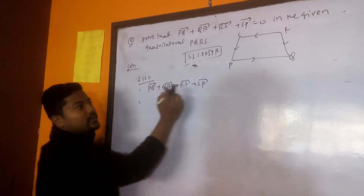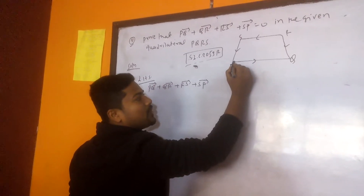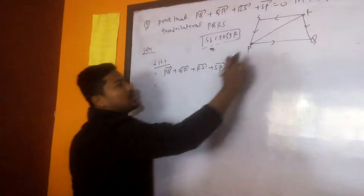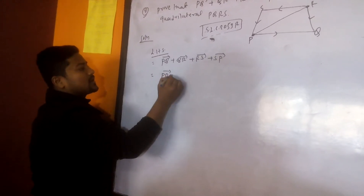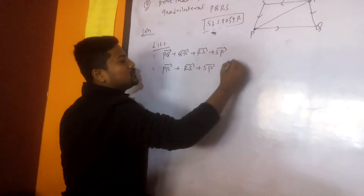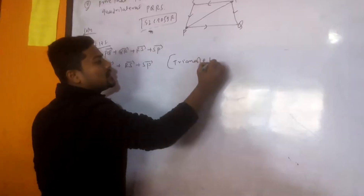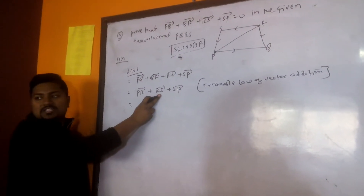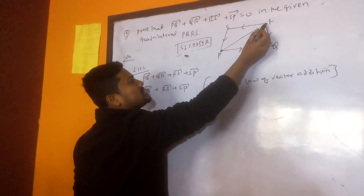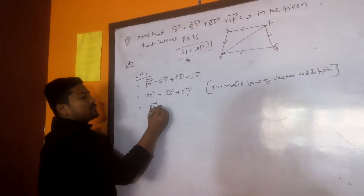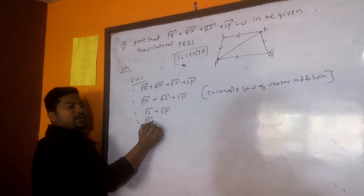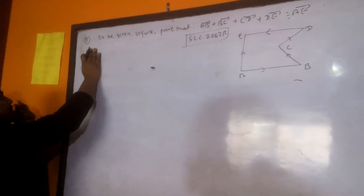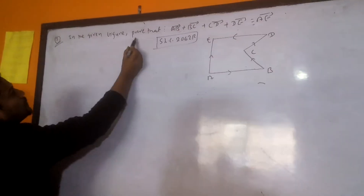PQ vector plus QR vector: the journey starts from P, and PQ plus QR gives PR vector. So PQ plus QR equals PR. Now the remaining part: RS vector plus SP vector — using triangle law of vector addition. Then PR vector plus RS vector gives PS vector. PS vector plus SP vector: if you write PS then minus PS, direction changes, sign becomes negative — this equals zero. RHS proved.